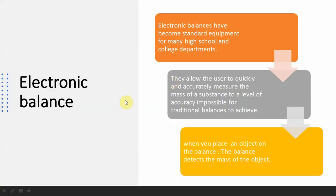Number third, electronic balance. Electronic balances have become standard equipment for many high school and college departments. The electronic balance allows the users to quickly and accurately measure the mass of a substance to a level of accuracy impossible for traditional balances to achieve.